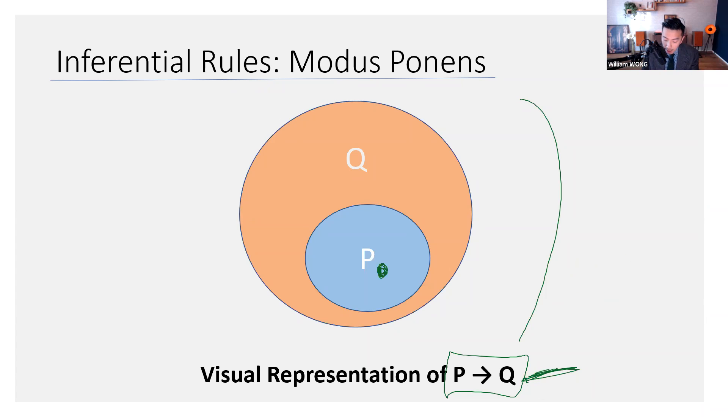Okay, now let's apply modus ponens. Premise one, P entails Q, which is the diagram. Then you say P. So you assert P. You know, there's a dot that's found here. Well, as soon as you have P, you also know you have Q, because that dot is also within the circle of Q. Right? Cool.